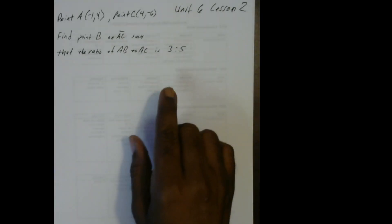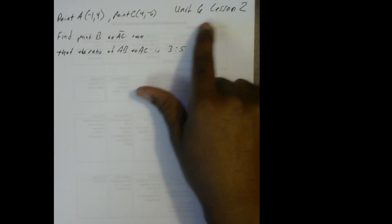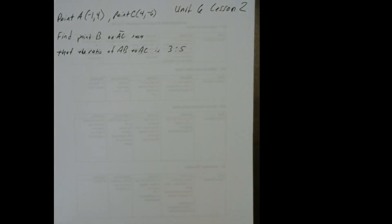Alright, this is from Khan Academy Geometry Unit 6 Lesson 2. We have point A at negative 1, 4 and point C at 4, negative 6. We want to find point B on line AC such that the ratio A to B and A to C is 3 to 5. Now what does all that mean in English?